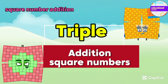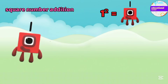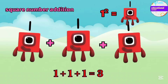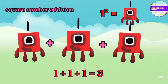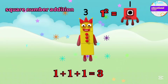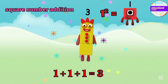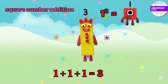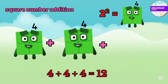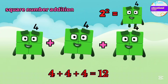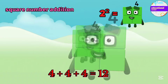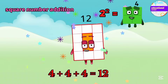Triple addition of square numbers. As you can see, one is the square of one. If we add three times one, we get the answer three. The square of two is four; we add four three times, the answer is twelve.